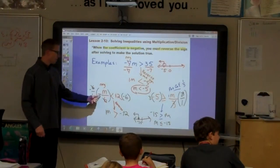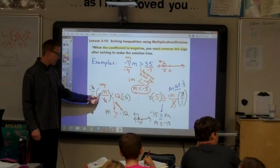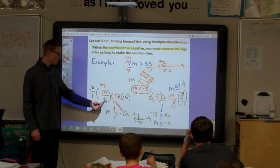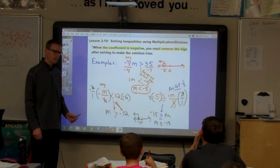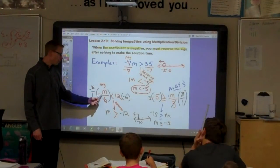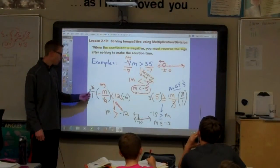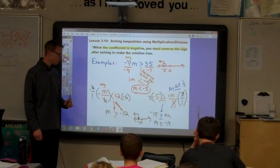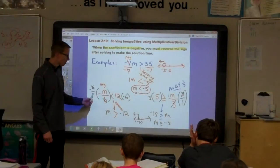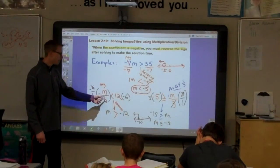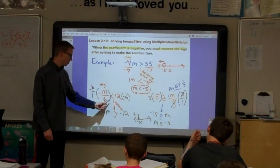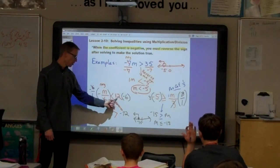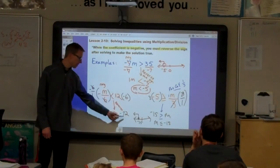Look at this example again. The coefficient in this one is negative 1 sixth. It says negative m over 6 is less than 12. The coefficient, then, is negative 1 over 6, and we multiply by negative 6 over 1. A reciprocal of negative 1 over 6. Then, since we're multiplying by negative, we have to reverse the sign.